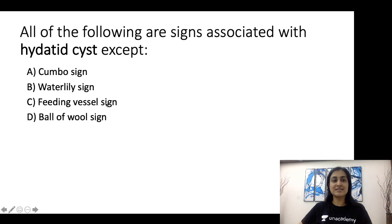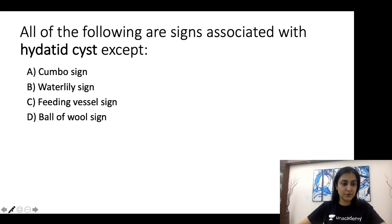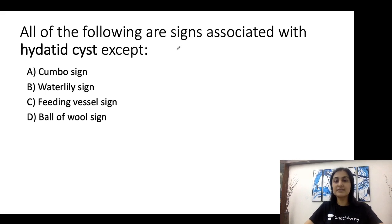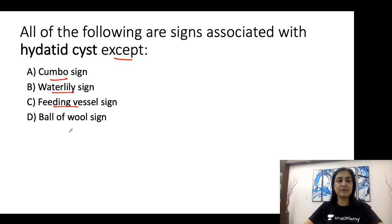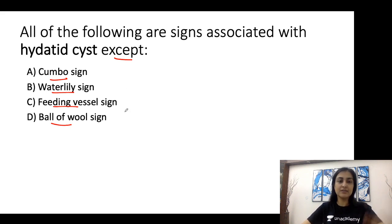Now starting with our radiology signs — today we are going to focus on hydatid cysts. I am going to ask you which sign is associated with hydatid cysts and which one isn't. All of the signs associated with hydatid cysts except: A is combo sign, B is water lily sign, C is feeding vessel sign, and D is ball of wool. Take a moment, look at the options, and think for yourself.